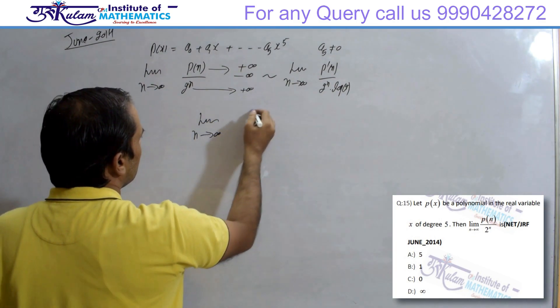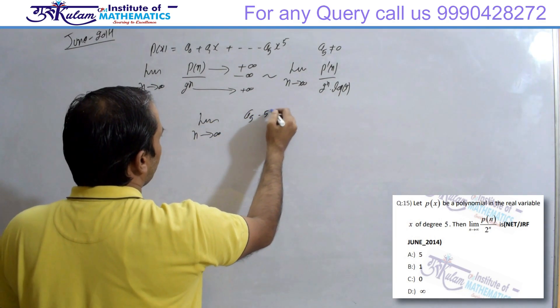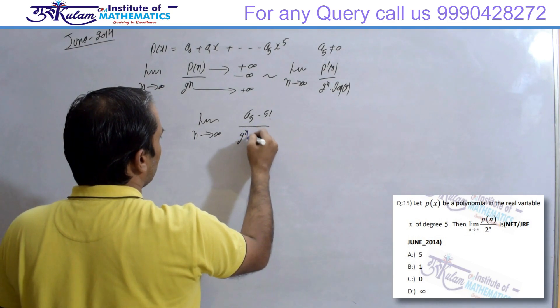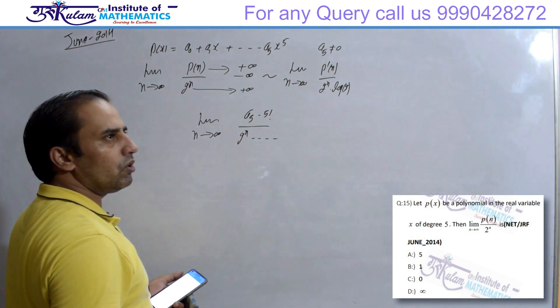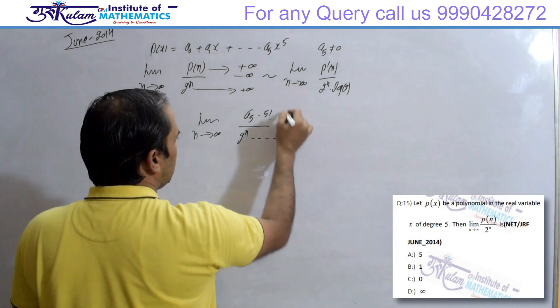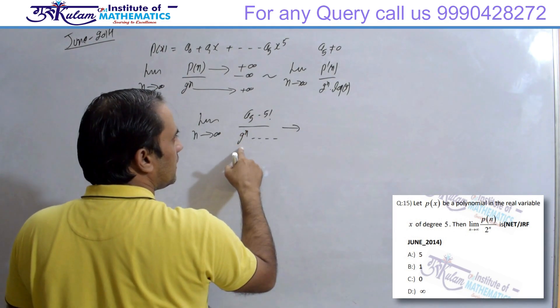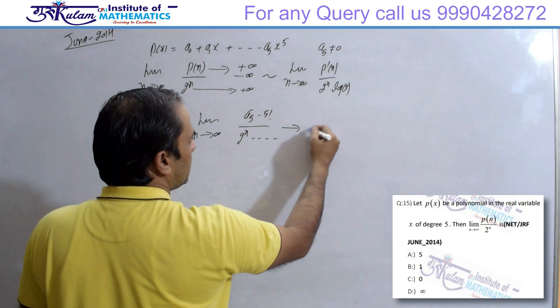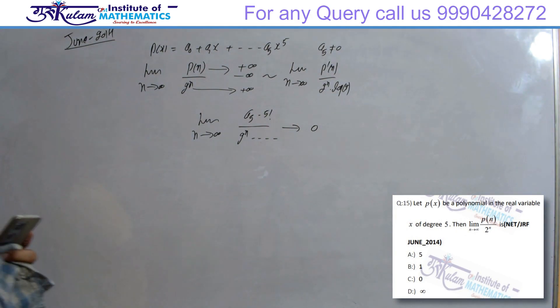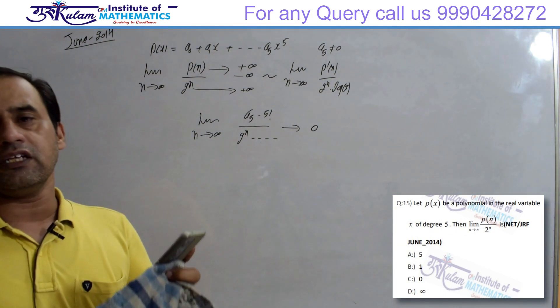A5 into 5 factorial upon 2 to the power N into (log 2)^5. N tends to infinity पे, ये constant quantity है, और ये कहां जा रहा है, infinity पे. तो overall quantity tends to 0. तो आपका यहां जो limit आएगा, it should be 0.